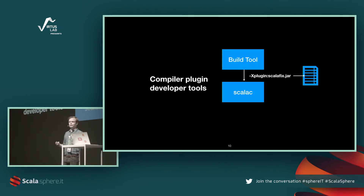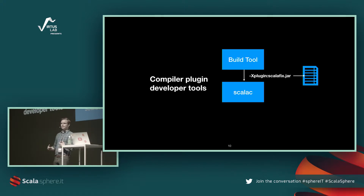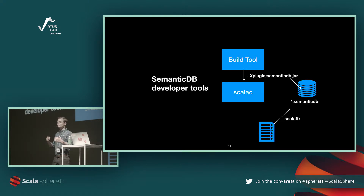Traditionally you would write a compiler plugin. This is the first version of how ScalaFix looked in 2016. I had a compiler plugin called ScalaFix, and the build tool such as SBT would add a compiler flag to enable the plugin. ScalaC would invoke ScalaFix, give access to the compiler trees with types and everything, and ScalaFix would perform the refactorings right then — which is a bit crazy because it's writing the sources that are being compiled.